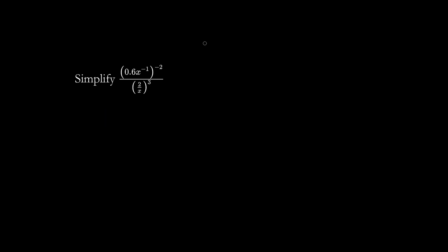When you see a decimal number, it's okay to rewrite it as a fraction. 0.6, or 6 over 10, is the same thing as 3 over 5. So we have 3 over 5.